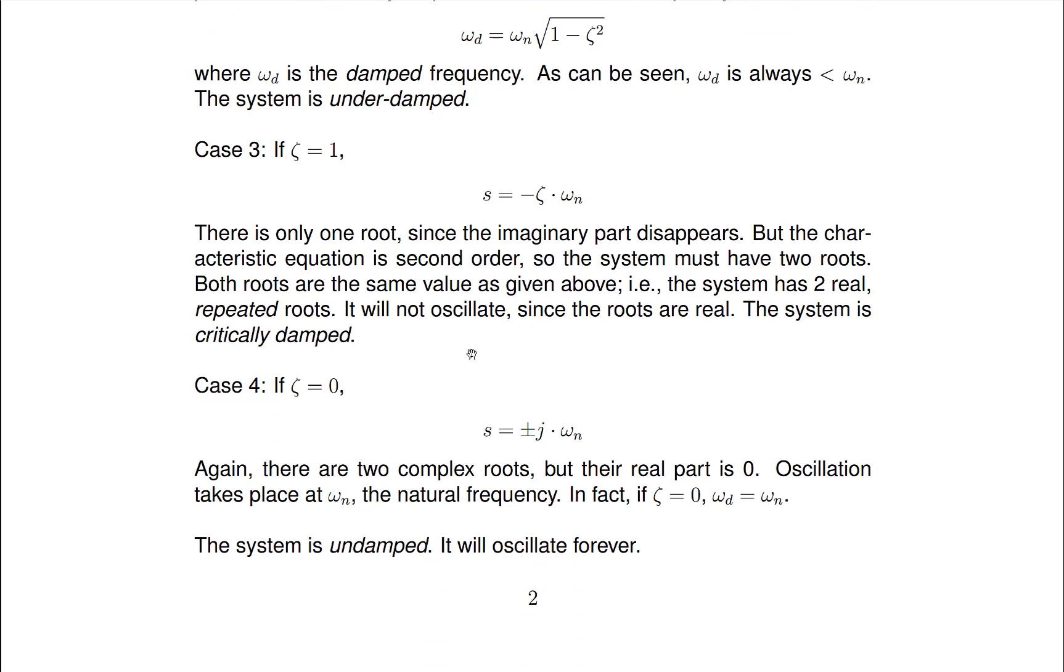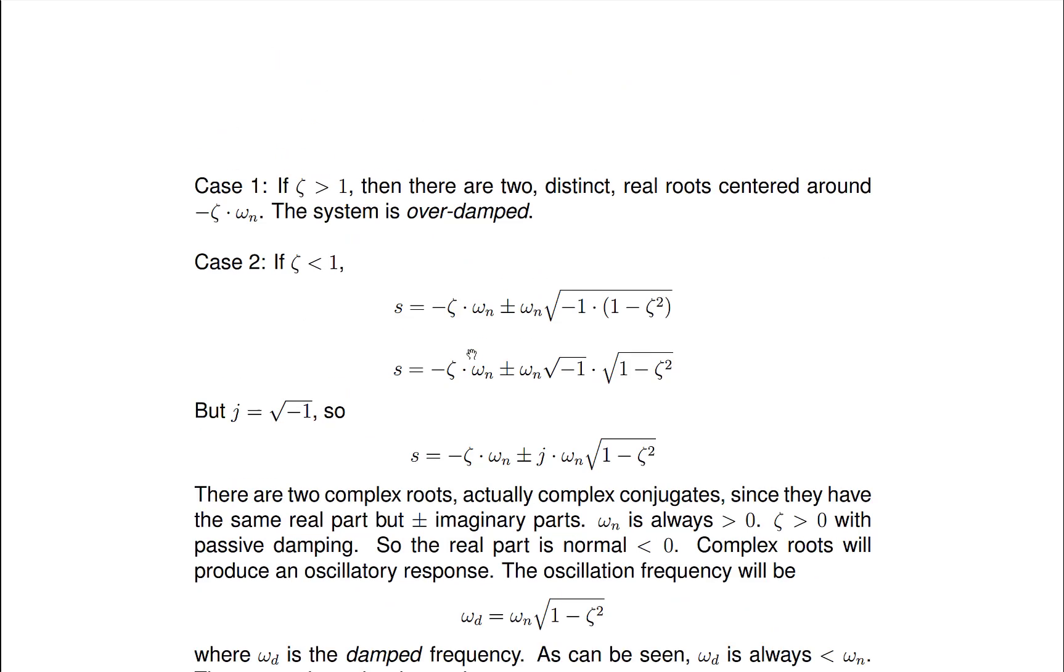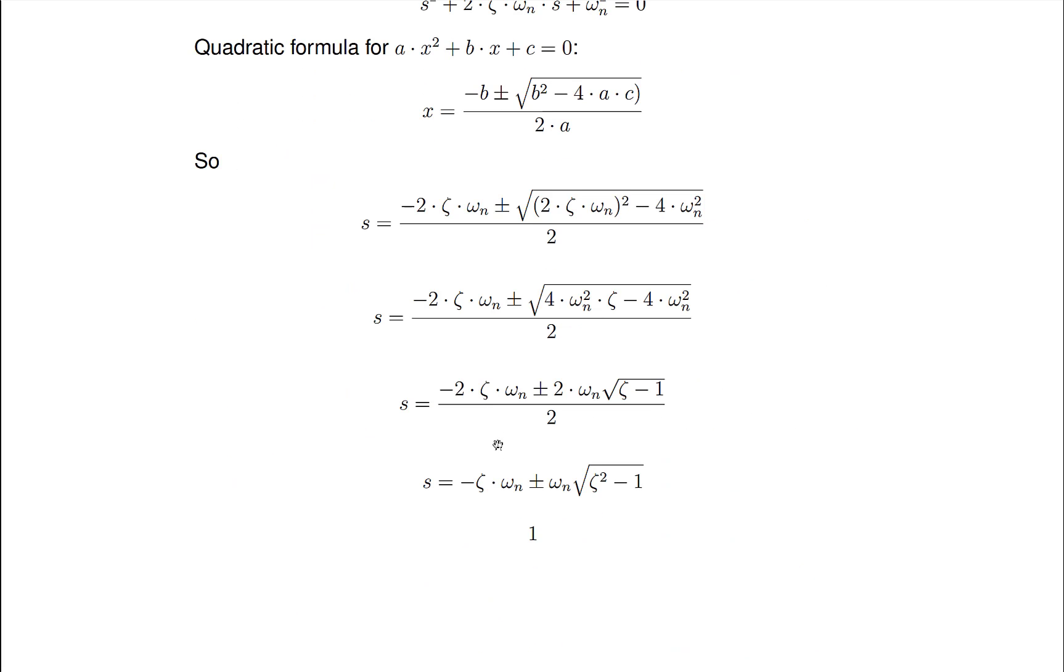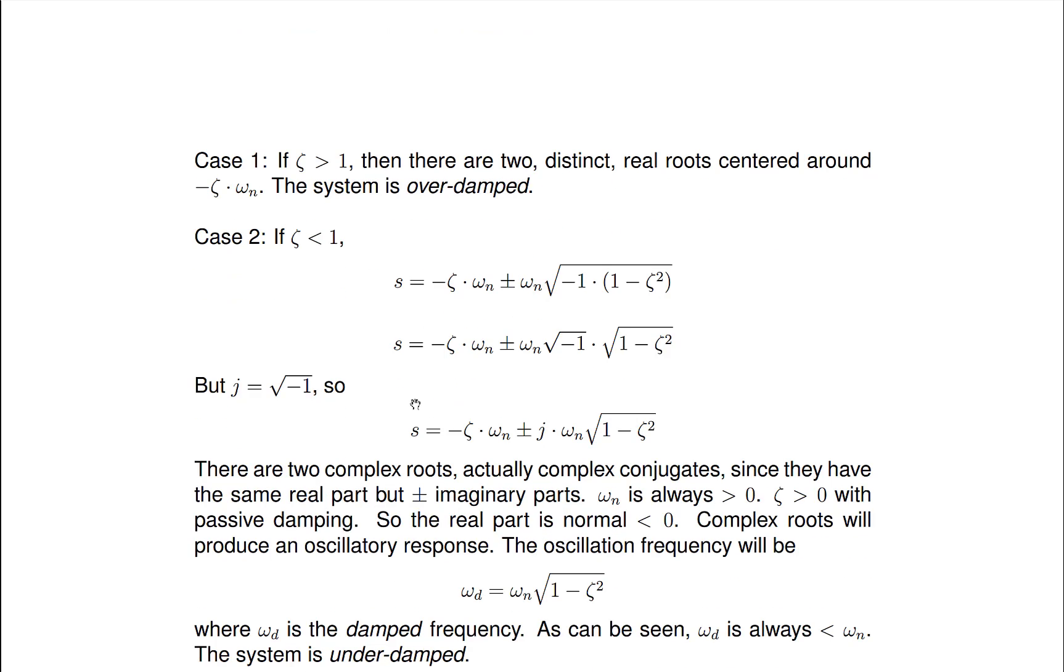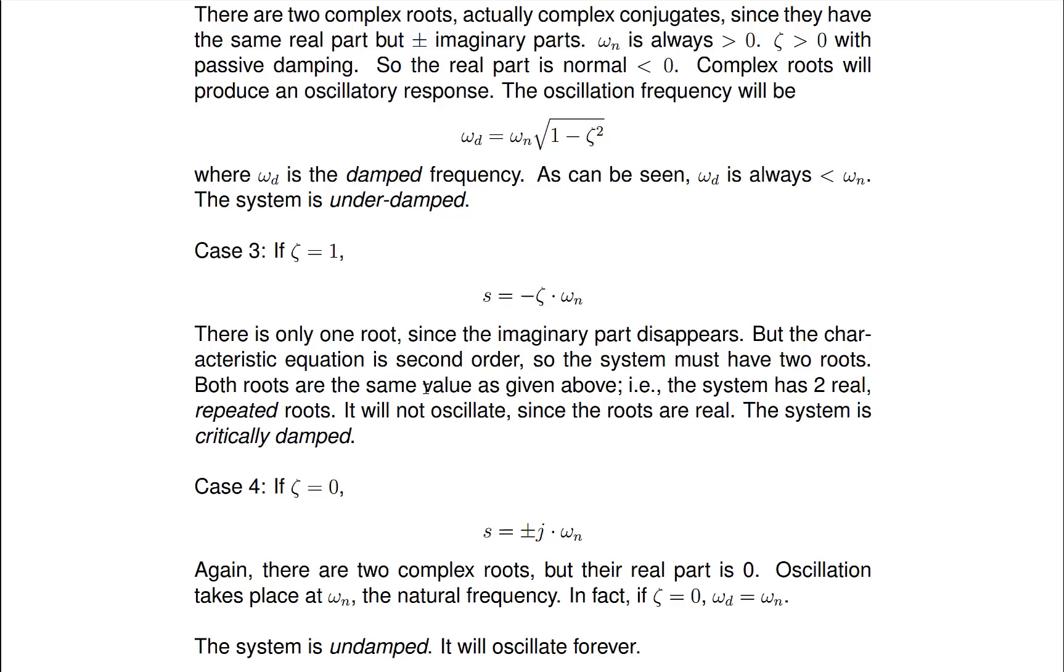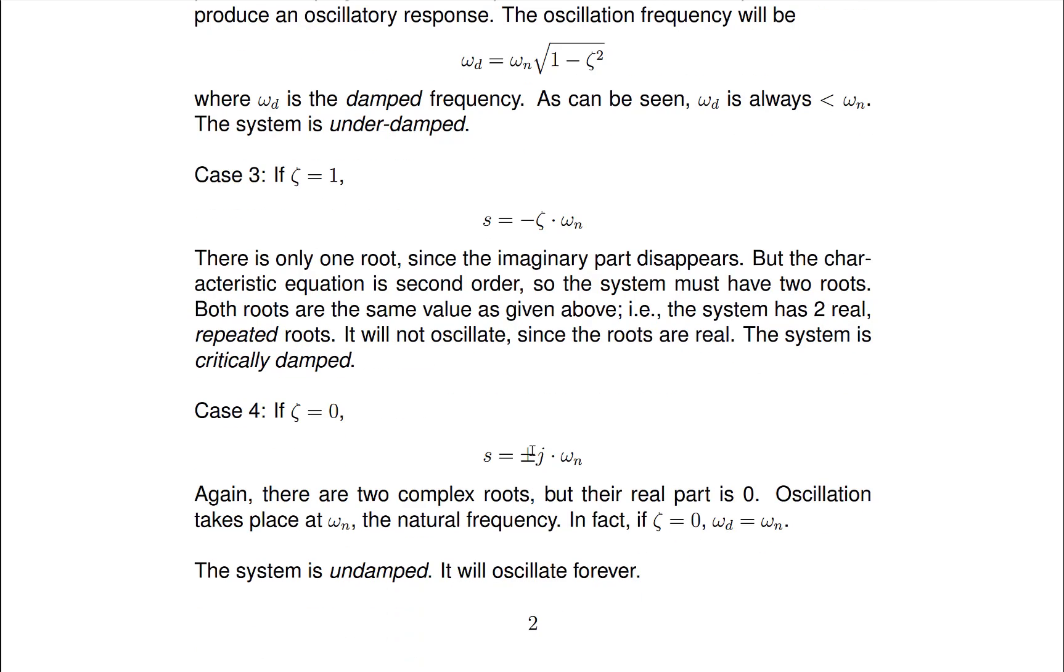Now, if zeta is equal to zero, which is another special case. Let me go back to my equation again. If zeta equals zero, this part goes away altogether. And then we wind up with zero here. So this becomes just j times omega n. So that's case four. And since it's a square root, it's going to be plus minus j omega n. So we have two complex roots, but the real part of those roots is zero. And that means that we'll have oscillation because we have complex roots. And the oscillation frequency will be omega n.